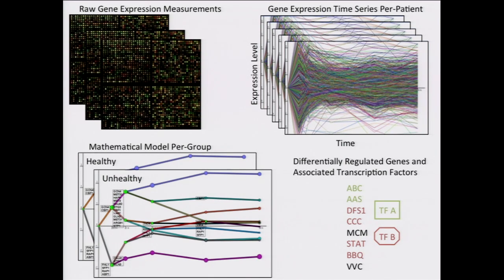With these models, we can actually figure out which genes are active in the disease, and hence, which transcription factors are causing genes to be active. Once we've built these two models, we can look to see how they're different using statistical tests. Transcription factors that are active in one model but not the other might be interesting — potentially as markers which can be used for diagnostics, or in the future as potential drug targets.